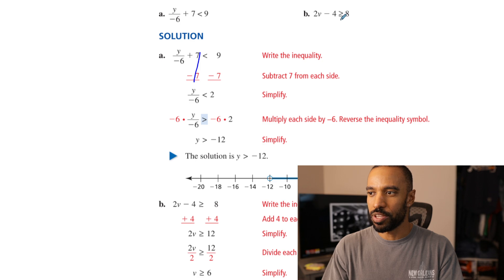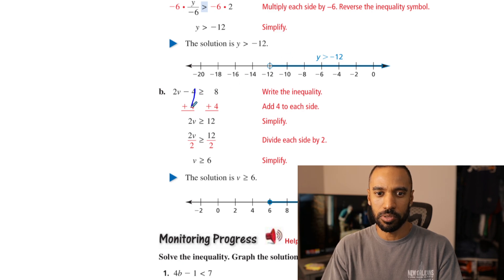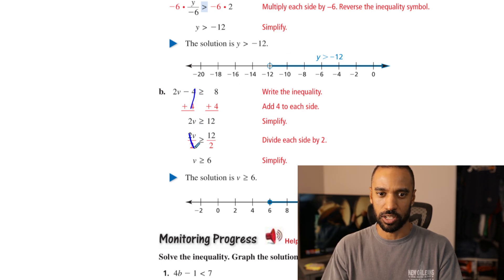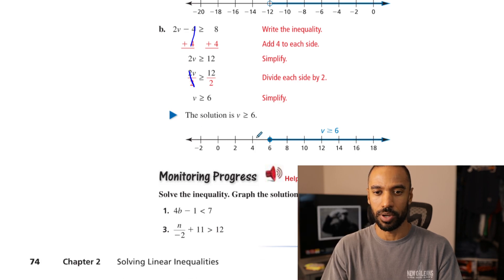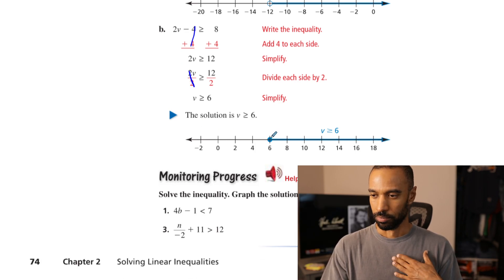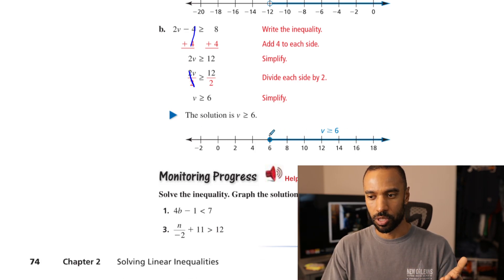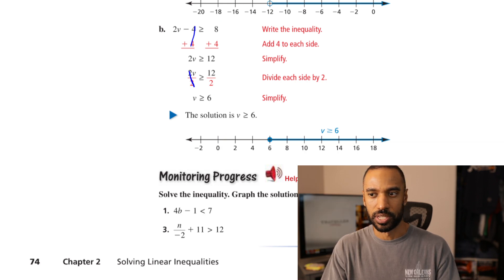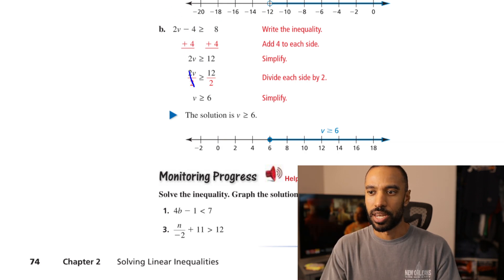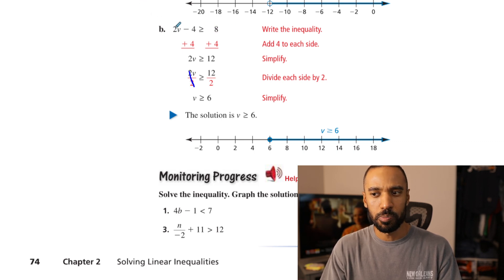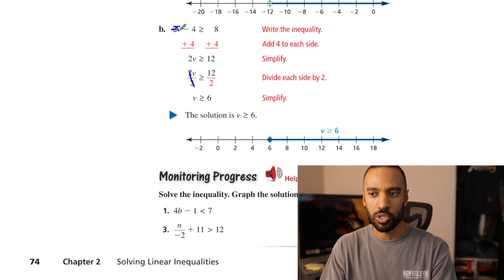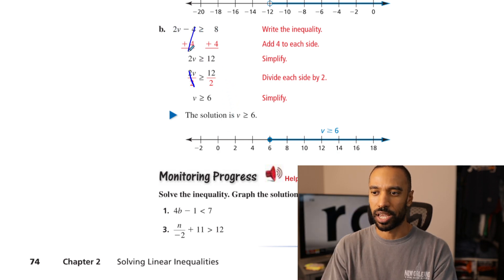Example B: 2v minus 4 is greater than or equal to 8 — arguably an easier problem. Add 4 to both sides, then divide both sides by 2. No flip in the inequality since we divided by a positive. V is greater than or equal to 6. Closed circle on 6 and graph to the right. Zero is not part of the solution set. Plugging in 0: 2 times 0 is 0, and 0 minus 4 is negative 4. Is negative 4 greater than or equal to 8? No — as expected.